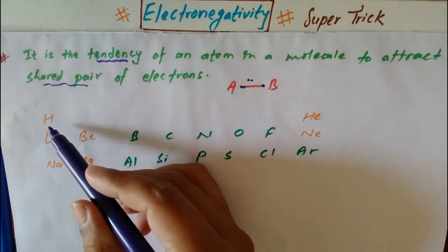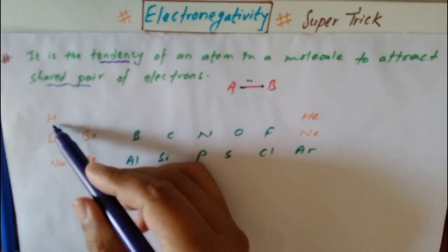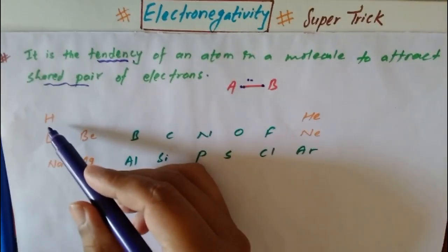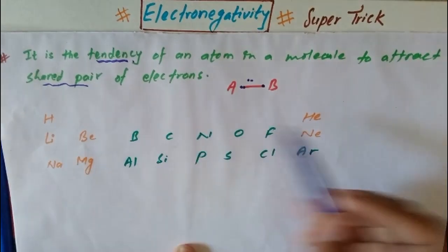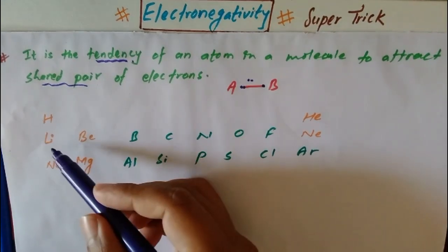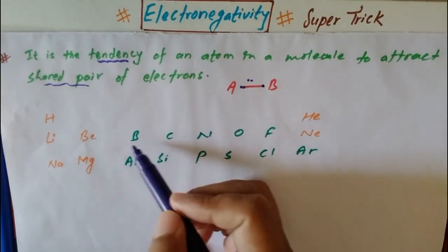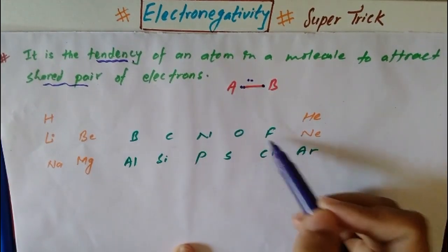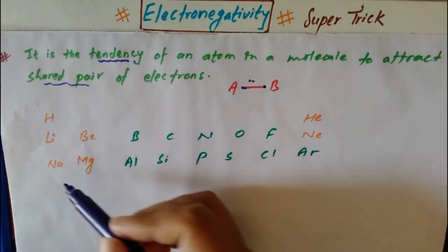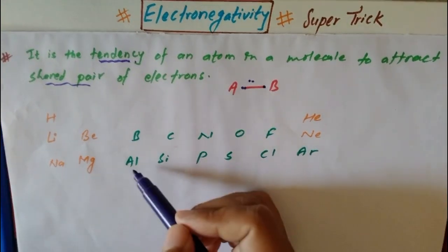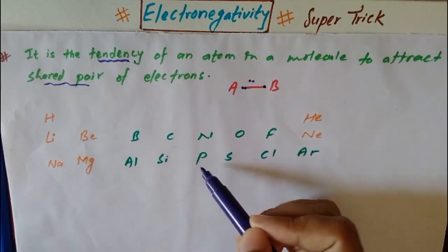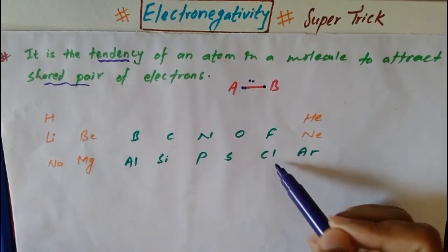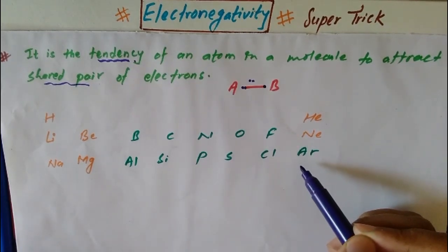In the periodic table: hydrogen, helium, lithium, beryllium, boron, carbon, nitrogen, oxygen, fluorine, neon, sodium, magnesium, aluminum, silicon, phosphorus, sulfur, chlorine, argon.